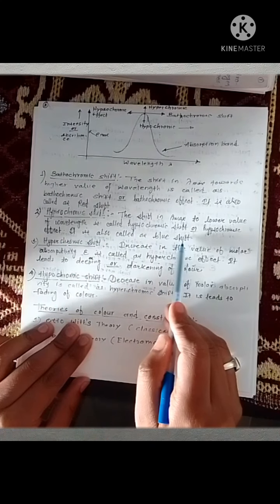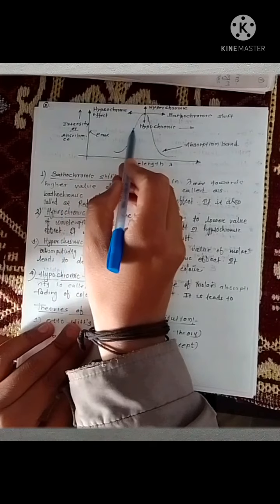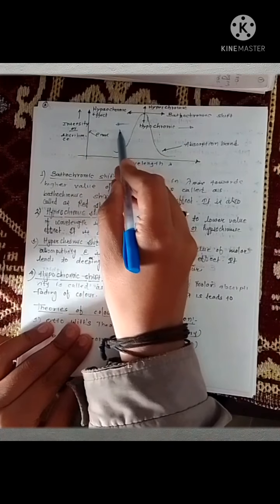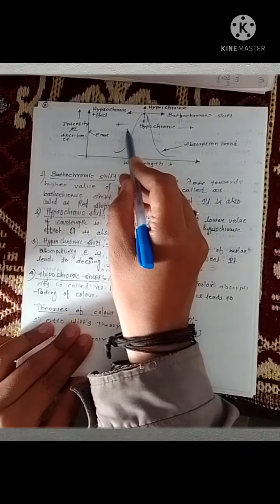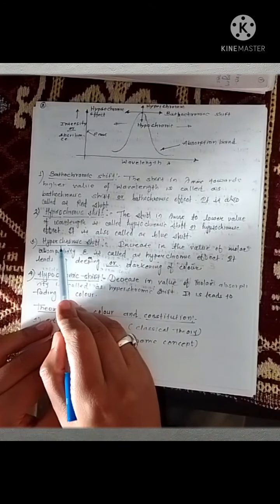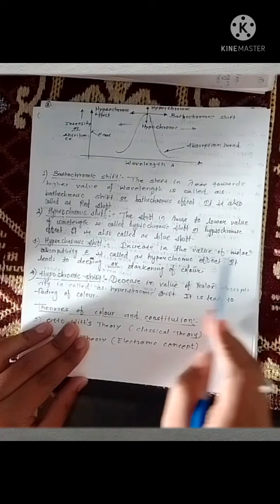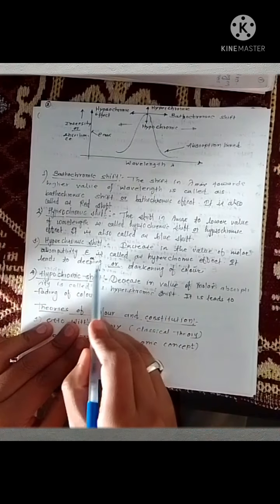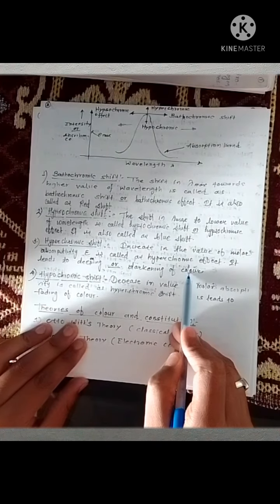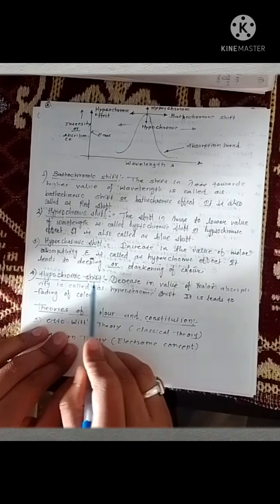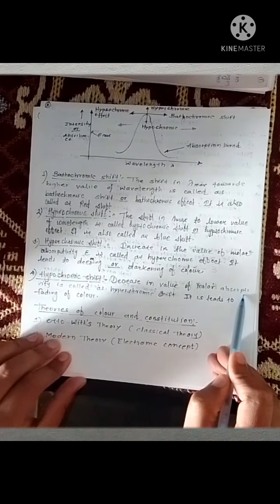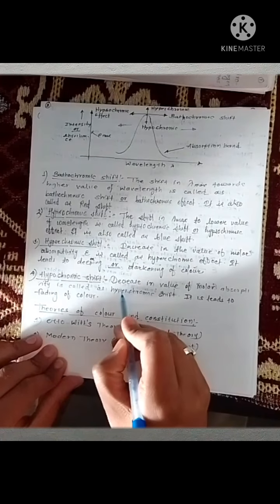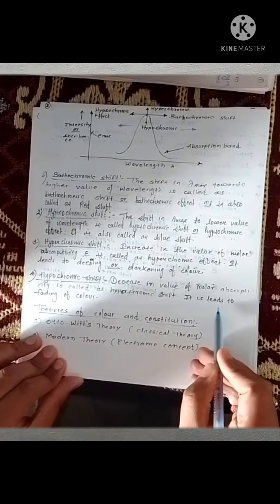What is hypsochromic shift? The shift in lambda max towards lower wavelength is called hypsochromic shift. It is also known as blue shift — if the lambda max value goes towards the left-hand side, that is, lambda max value decreases. What is hyperchromic shift? Increase in the value of molar absorptivity, epsilon, is called hyperchromic effect; it leads to deepening or darkening of the color. What is hypochromic shift? Decrease in the value of molar absorptivity, epsilon, is known as hypochromic shift; it leads to fading of color.